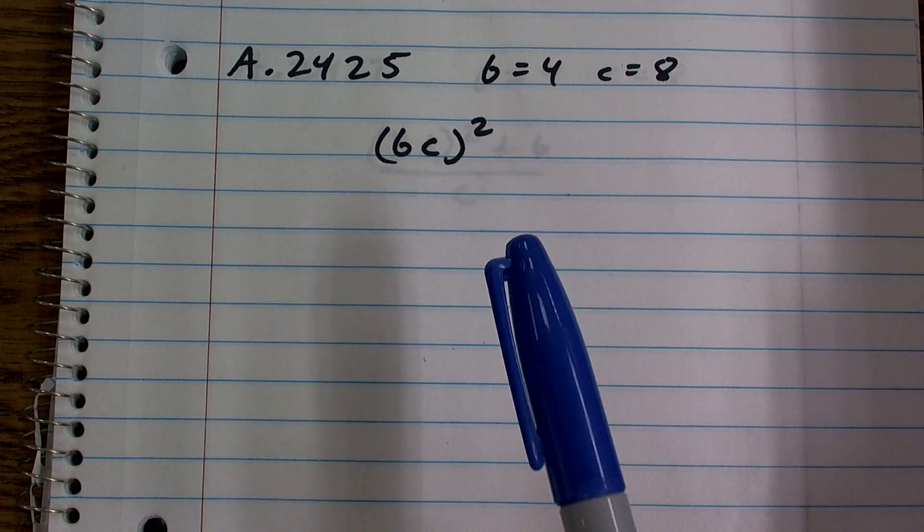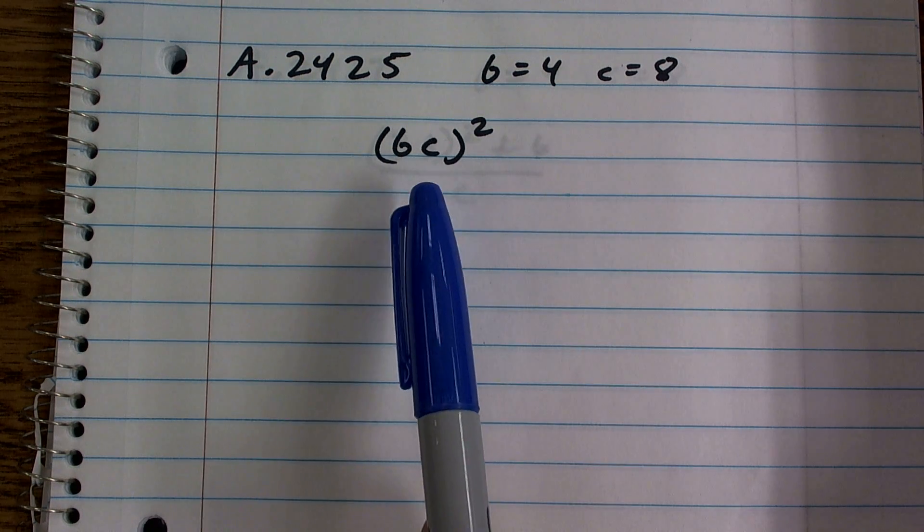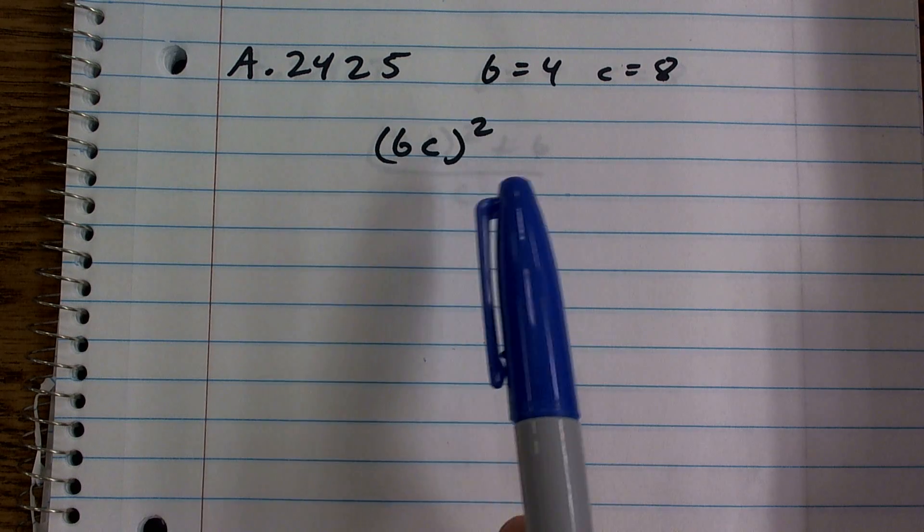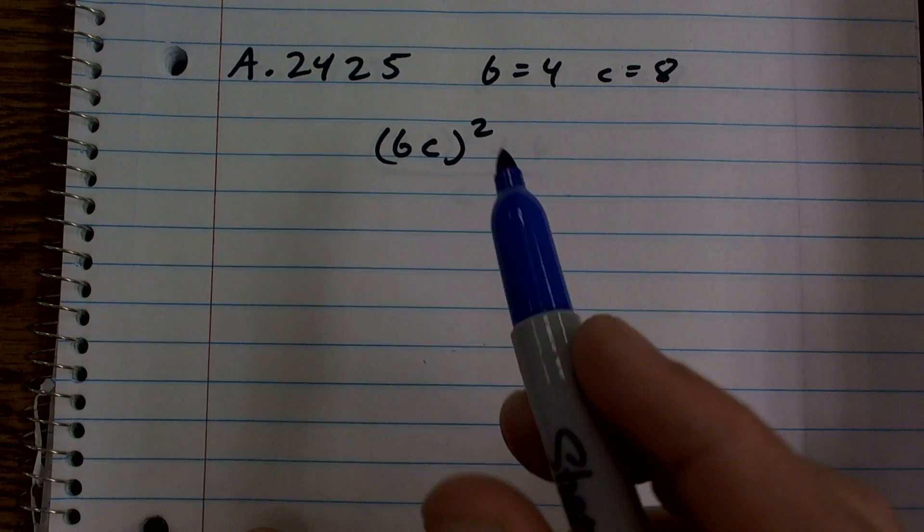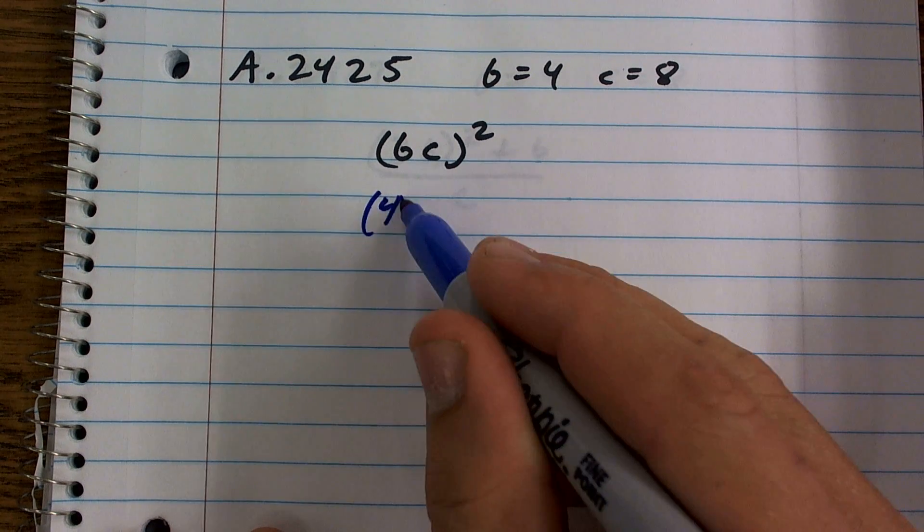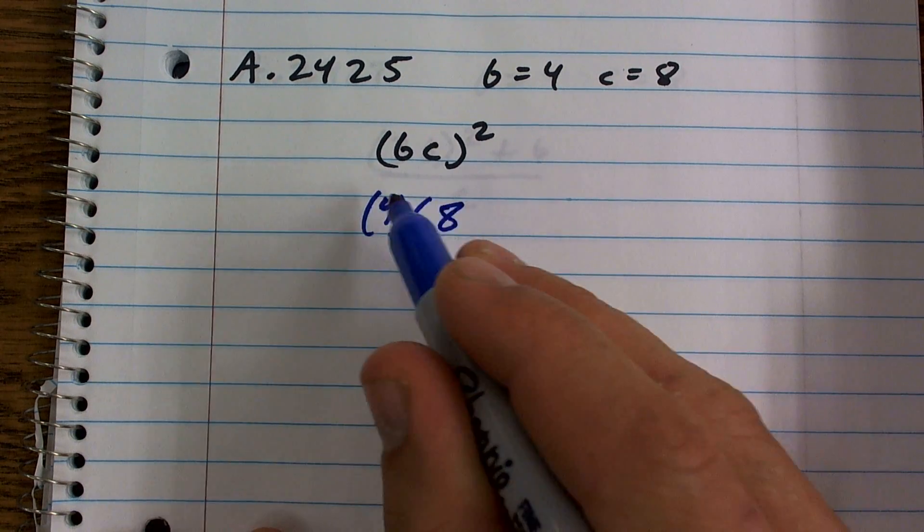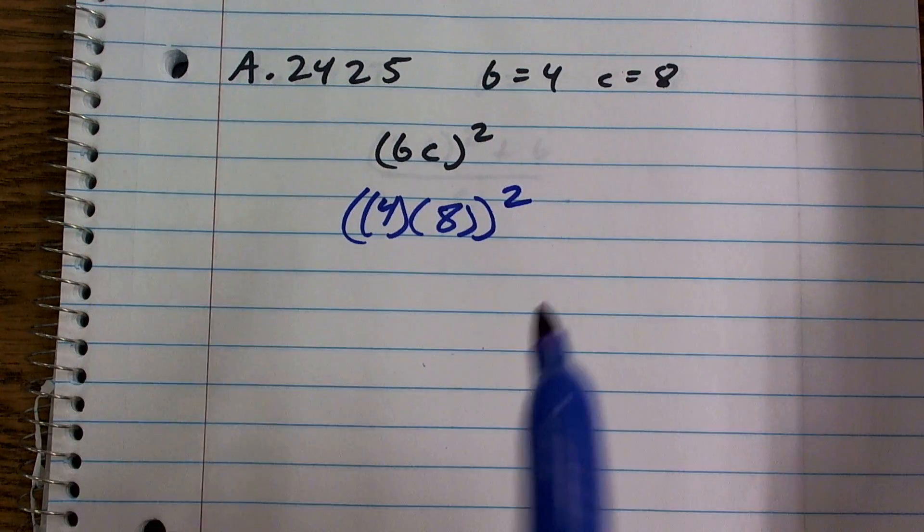Well, all we know is right here, I don't know what the values of b and c are, but now they tell us the value of b equals 4, the value of c equals 8. So what I'm simply going to do is plug in 4 for b and 8 for c, and then all that is squared.